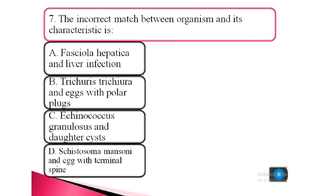Question 7. The incorrect match between organism and its characteristics is: a. Fasciola hepatica and liver infection, b. Trichuris trichiura and egg with polar plugs, c. Echinococcus granulosus and daughter cysts, d. Schistosoma mansoni and egg with terminal spine.